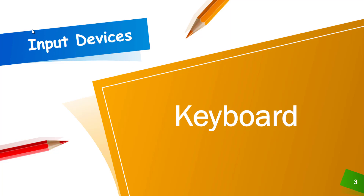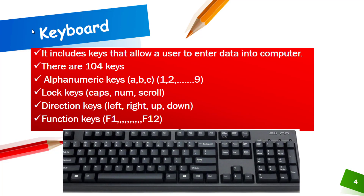Let's discuss a few of them in detail. Keyboard includes keys that allow a user to enter data into a computer. There are 104 keys on the keyboard, which are further divided into types like alphanumeric keys — letters A, B, C and so on — and numeric keys like 1, 2, 3, 4 and so on up to 9. These are all alphanumeric keys. There are also 3 lock keys: caps lock, num lock, and scroll lock.